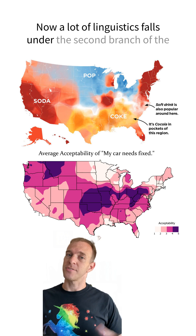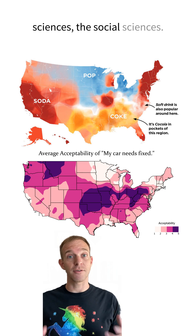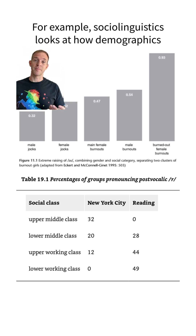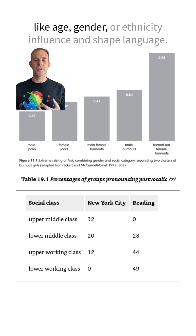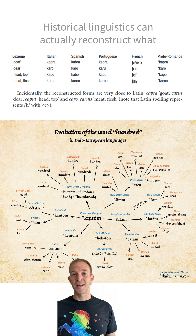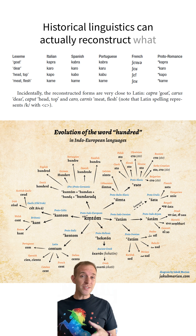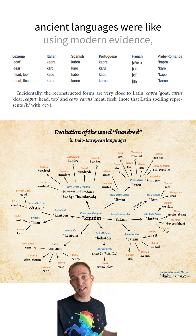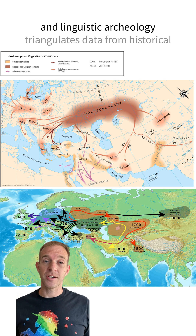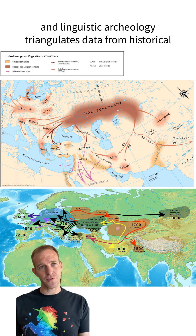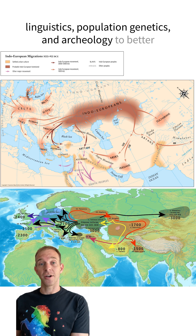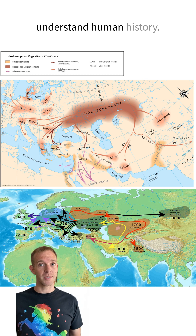Now, a lot of linguistics falls under the second branch of the sciences, the social sciences. For example, sociolinguistics looks at how demographics like age, gender, or ethnicity influence and shape language. Historical linguistics can actually reconstruct what ancient languages were like using modern evidence. And linguistic archaeology triangulates data from historical linguistics, population genetics, and archaeology to better understand human history.